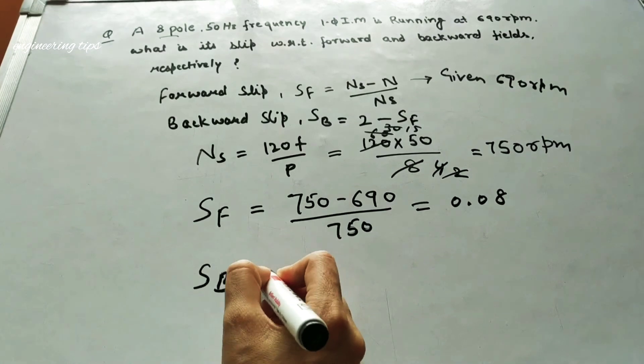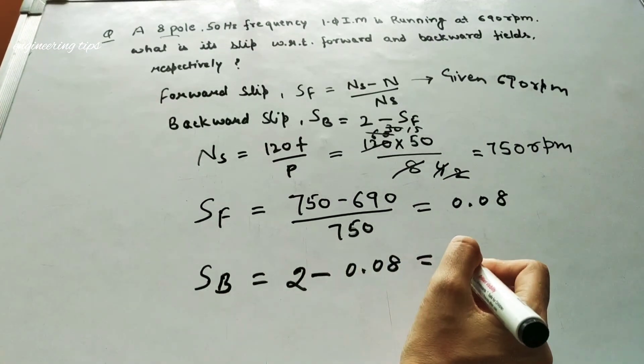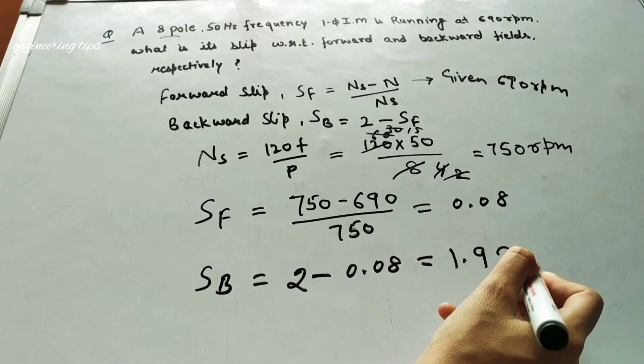Now backward slip: 2 minus 0.08, which equals 1.92.